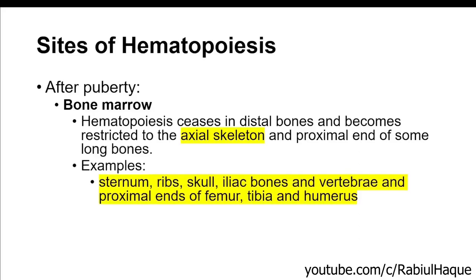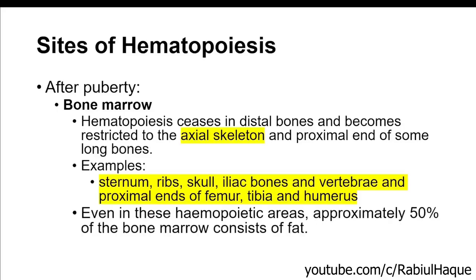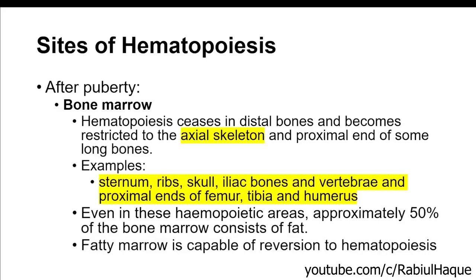The sites of hematopoiesis after puberty are very important to remember. They include the axial skeleton such as sternum, ribs, skull, iliac bones, and vertebra, and also the proximal ends of some long bones like femur, tibia, and humerus. Even in these hematopoietic sites, not the entire bone marrow is making blood cells — approximately 50% of the bone marrow in these bones is made up of fat. However, fatty marrow is capable of reversion to hematopoiesis when required.